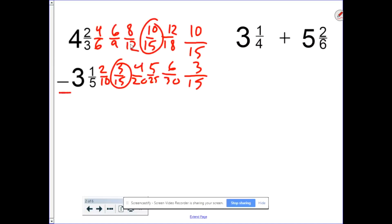10 15ths and 3 15ths. So I have 4 and 10 15ths minus 3 and 3 15ths. Okay. 10 15ths minus 3 15ths is 7 15ths. And 4 minus 3 is 1. So my answer is 1 and 7 15ths.